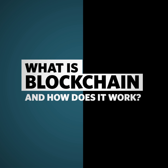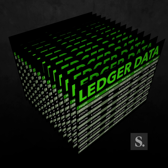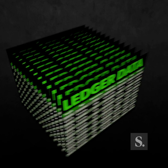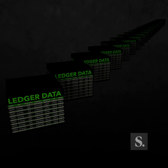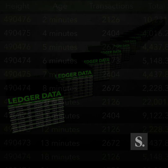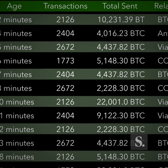A blockchain is a database that acts like a shared ledger. The ledger is a record of transactions that have taken place. In the computing world, a set of data is called a block. A blockchain is simply a set of data blocks that have been chained together in a single record set. A blockchain provides a shared encrypted record of transactions that can be used to verify future transactions.